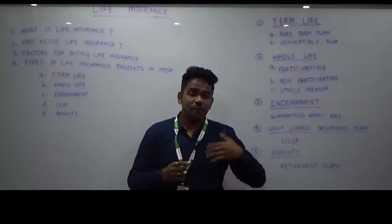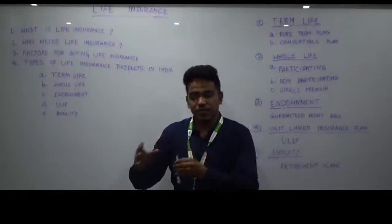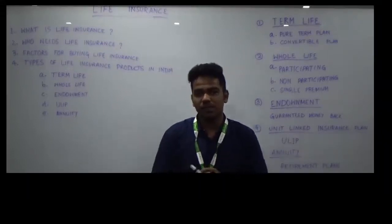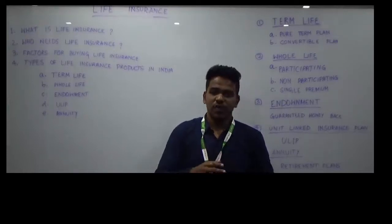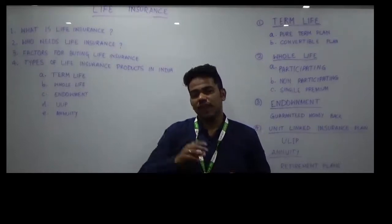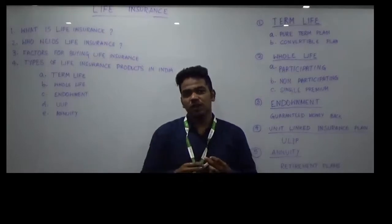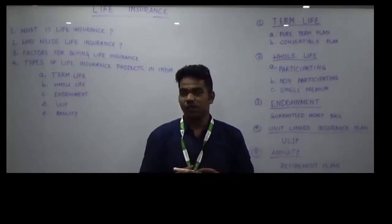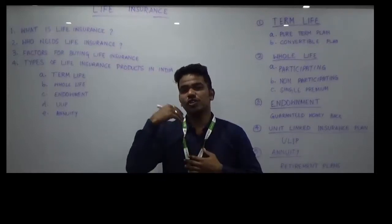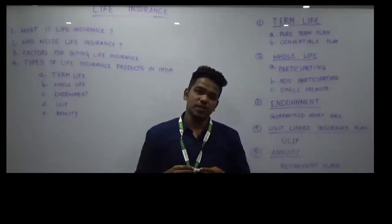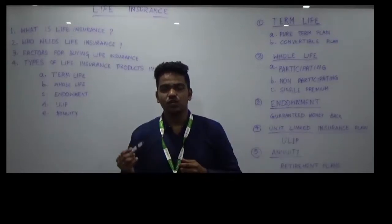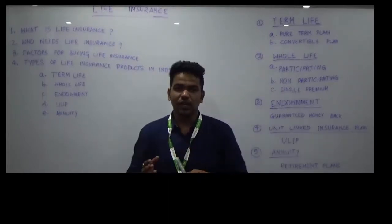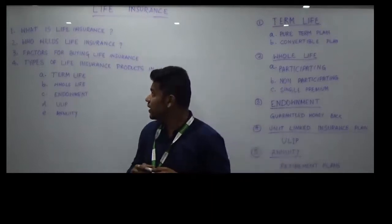Life insurance is essentially a compensation which can be used for any obstacle coming in any family. Now let us understand who needs life insurance. People who are the sole breadwinner for the family — if anything happens to them, any natural or sudden death, then financial compensation has to be provided to their family. These people require life insurance. Secondly, housewives working in the family also need life insurance. Children too, for future risks associated with them, also need life insurance.